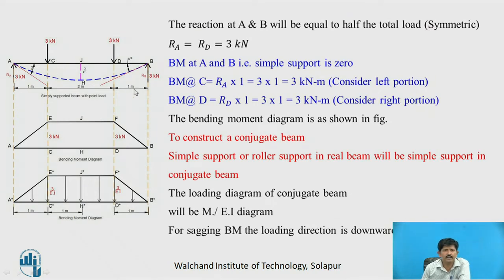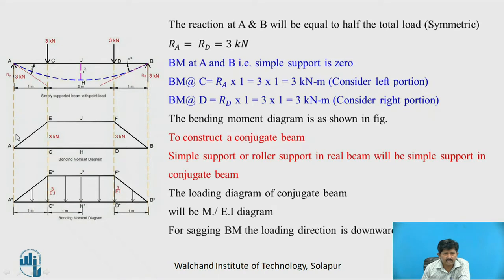To find the bending moment we first find the reactions. As the loading is symmetric, reactions RA and RB are equal to the total load divided by 2, that is (3 + 3)/2 = 3 kN. The bending moment at A and B for a simply supported beam is zero. Bending moment at C, considering the left portion, is 3 × 1 = 3 kN·m. Bending moment at D, considering the right portion, is RB × 1 = 3 × 1 = 3 kN·m. As there is no loading between C and D, the bending moment is constant in that region, giving the bending moment diagram as shown.